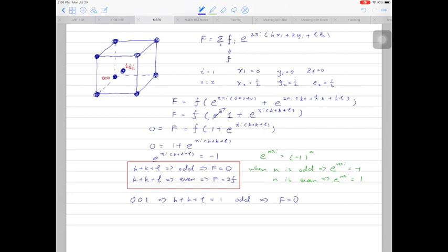On the other hand, if we look at the 002 set of planes, in this case h plus k plus l is equal to 2, so it's an even number. And f is not equal to 0, so we can see the 002 diffraction spots.